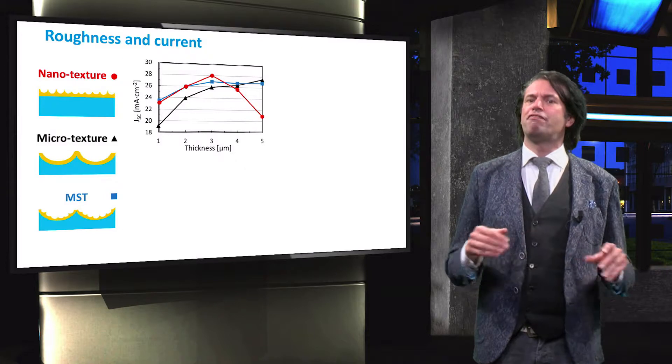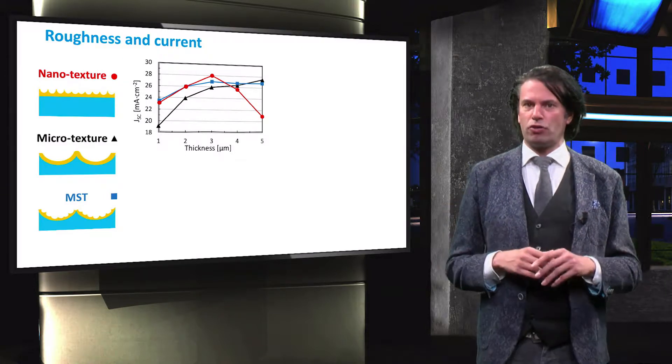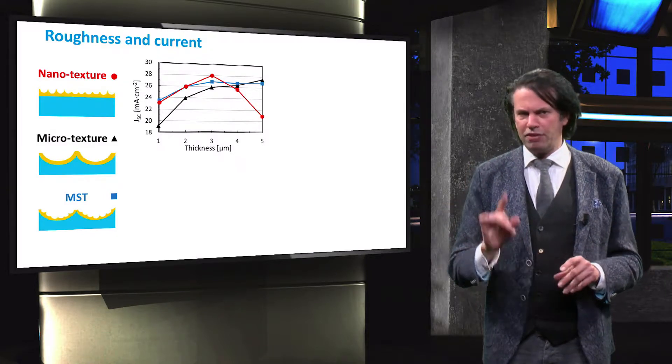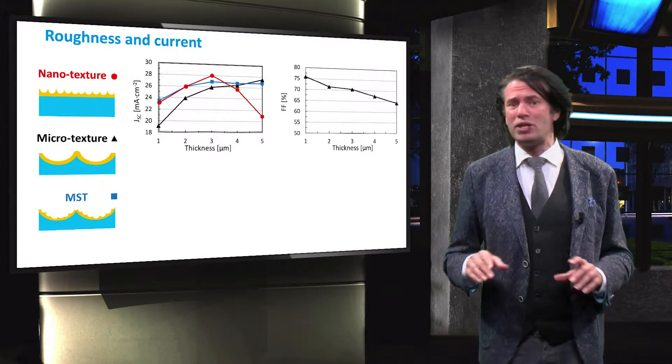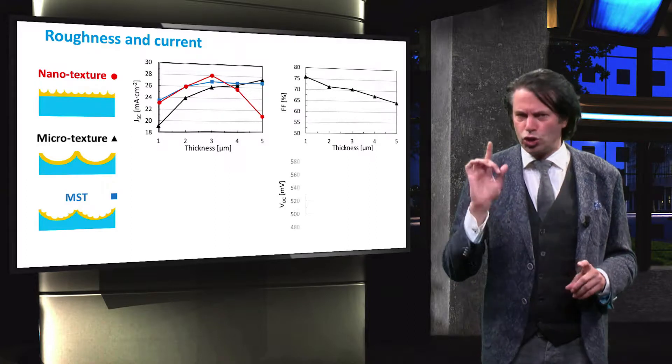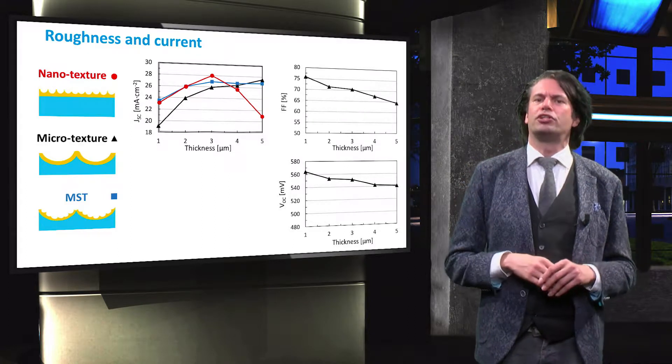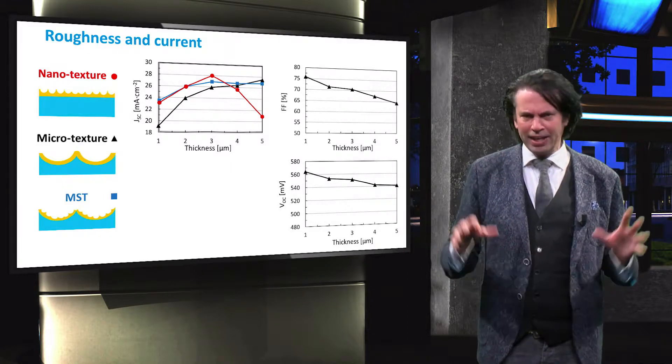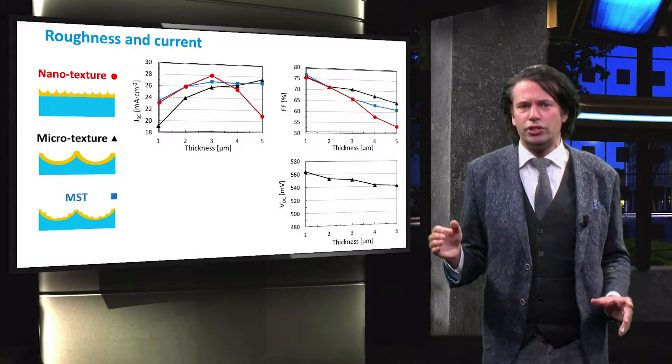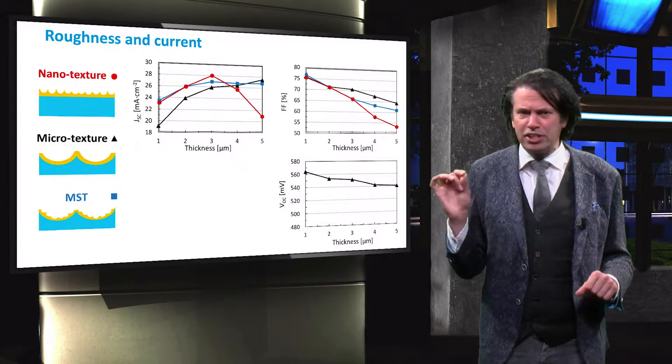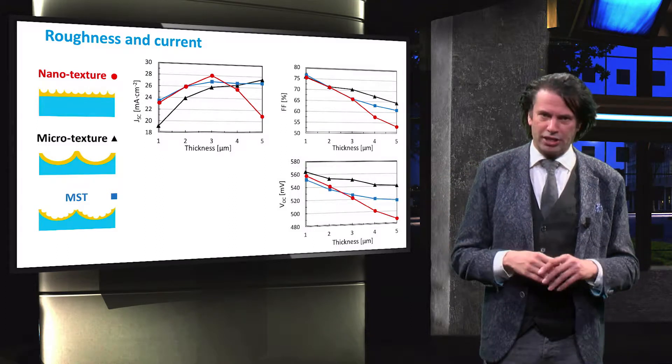The texturing features affect more than just the light trapping of the cell, however. We can see that the fill factor of the micro-textured cell decreases with increasing absorber layer thickness. So does the open-circuit voltage of the cell. This decrease is however much more pronounced in the cells with nanotexture, especially the cell with only nano-sized features.